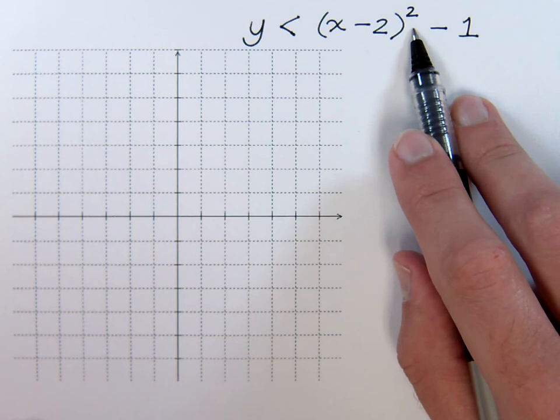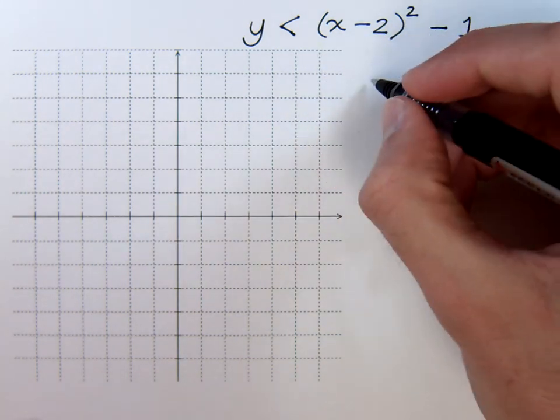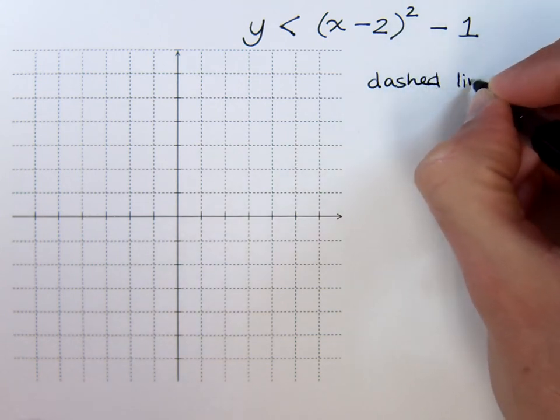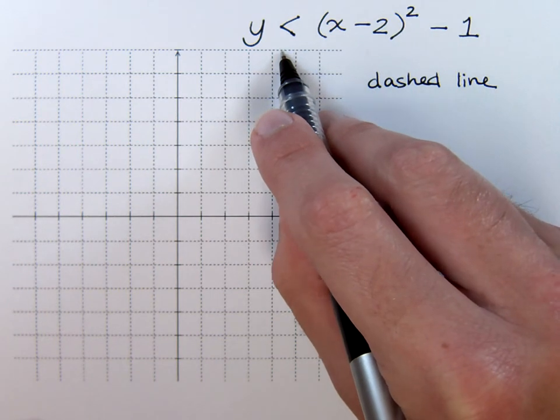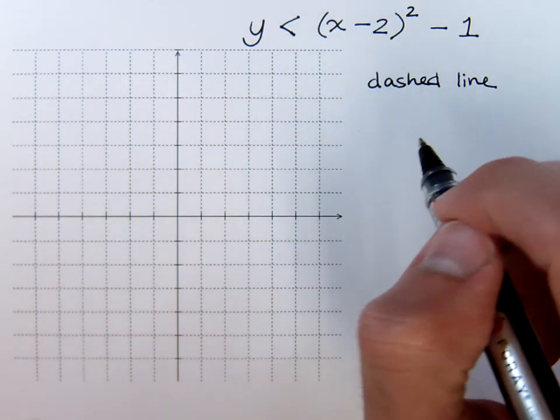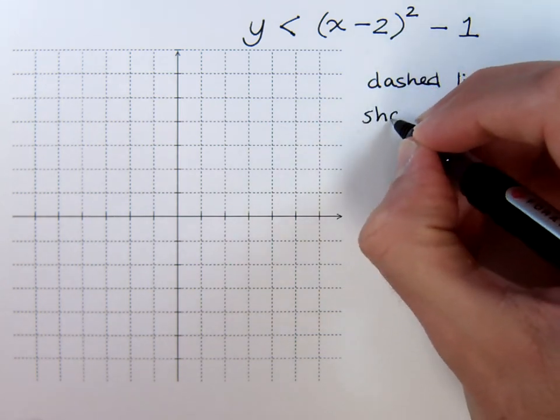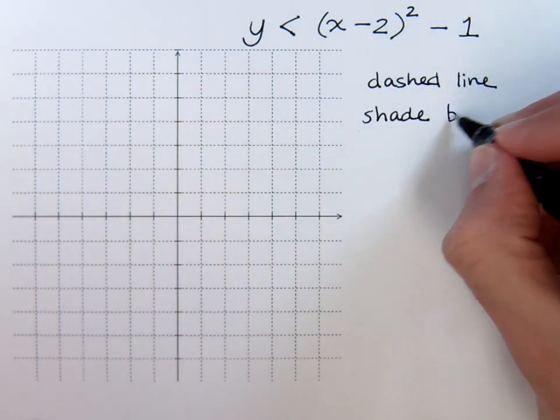Now, some things that we can find out about this guy is that we know that this should be a dashed line. We know that it's supposed to be dashed because we are not equal to, just less than. We know that we will be shading where? It says y is less than, so that means we need to shade below.